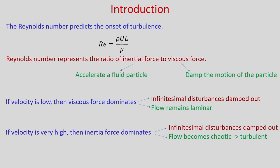Why is Reynolds number so important in finding the onset of turbulence? Reynolds number is defined as ρUL/μ, where ρ is the fluid density, μ is viscosity, U is flow velocity, and L is the characteristic length. Reynolds number is the ratio of inertia force to viscous force. Inertia force accelerates a fluid particle, while viscous force damps its motion. If velocity is low, viscous force dominates; infinitesimal disturbances damp out due to viscosity and flow remains laminar.